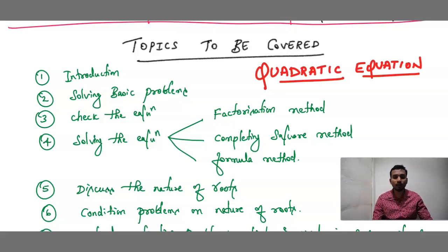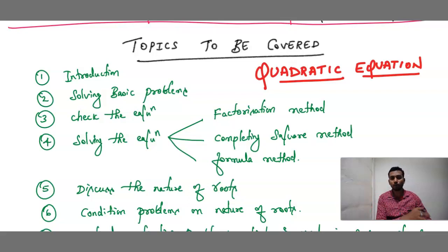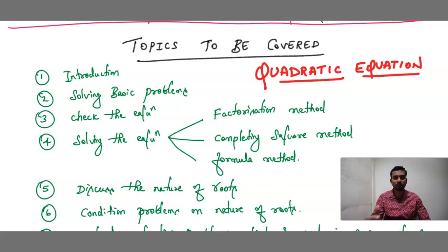Next we are going to discuss the nature of the roots. When we solve one equation we get 2 answers. In polynomials we call them zeros of the polynomial; here we call them roots of the equation.